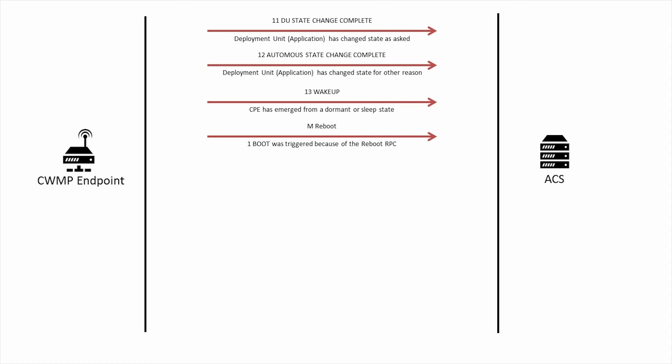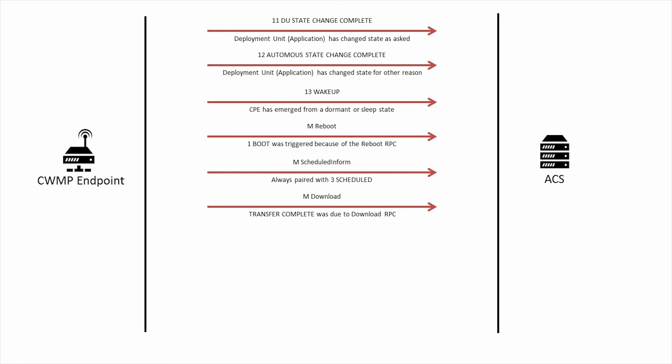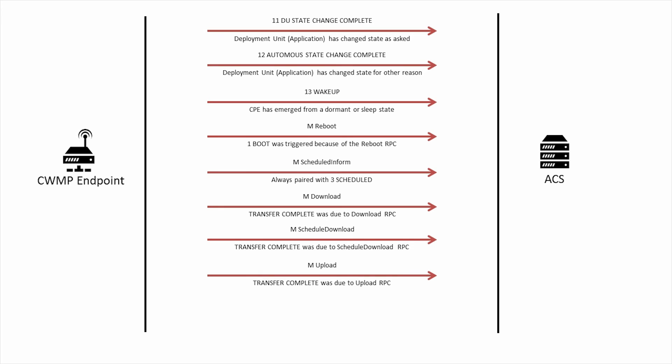These include M reboot, which when paired with the one boot event indicates that the device rebooted because the ACS used the reboot RPC. M scheduled inform always occurs whenever the three scheduled event occurs. M download occurs with seven transfer complete when a download triggered by the download RPC completes. Similarly with M schedule download and M upload. Lastly, M change DU state is paired with the DU state change complete event when the change was due to use of the change DU state RPC.